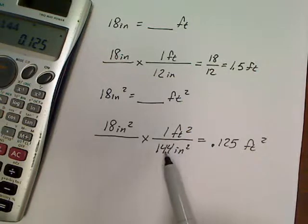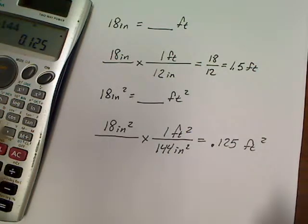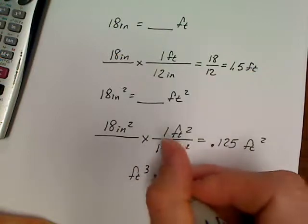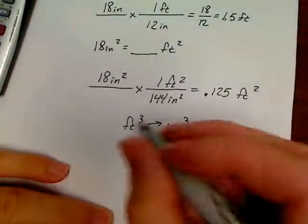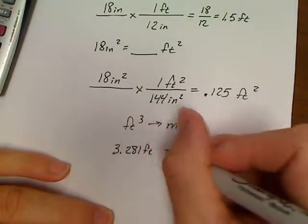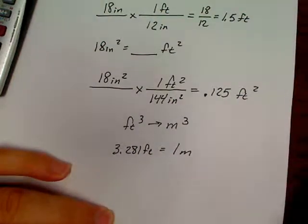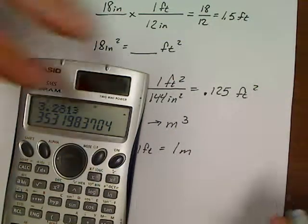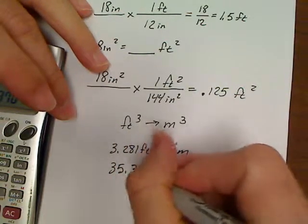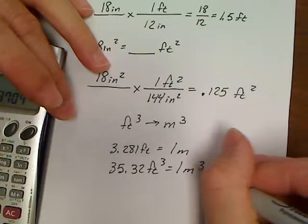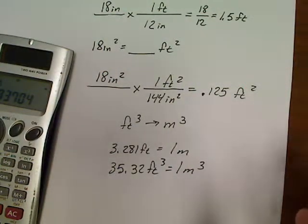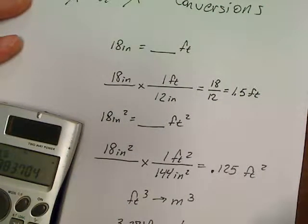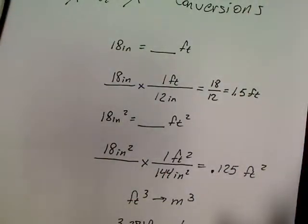If you want to convert cubes, all you do is cube the conversion factor. For example, feet cubed per meter cubed: instead of 3.281 feet per one meter, cube it. 3.281 cubed is 35.32, so there are 35.32 feet cubed for every meter cubed. Work it like any other problem — just cube your conversion factors. That's the only trick to doing squared or cubed conversions.